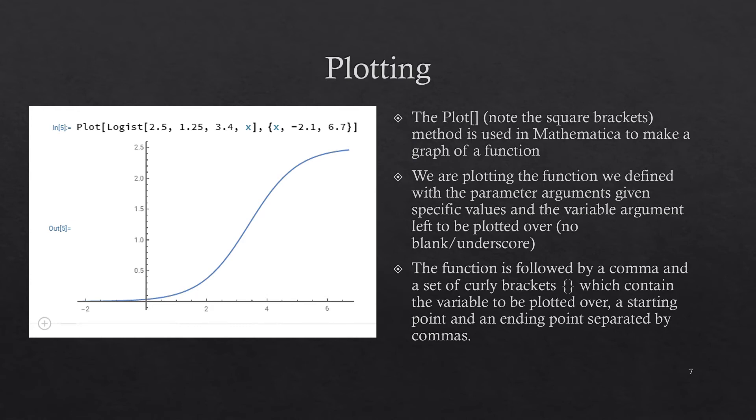Then we give the name of the function that we want to plot. It's the function that we previously defined, the logist function. And the logist function that we defined had four arguments: three of them were parameters, and we are giving the parameters explicit values, just sort of made up: 2.5, 1.25, 3.4.